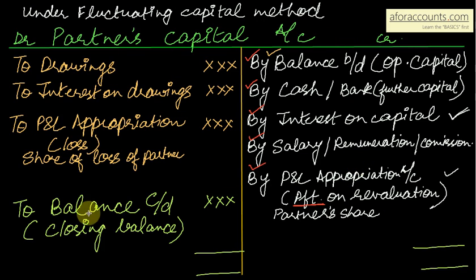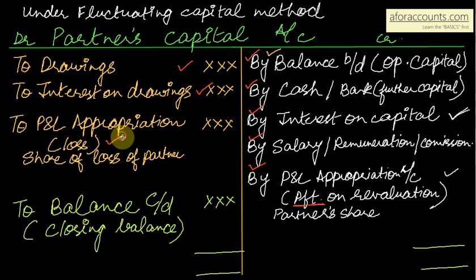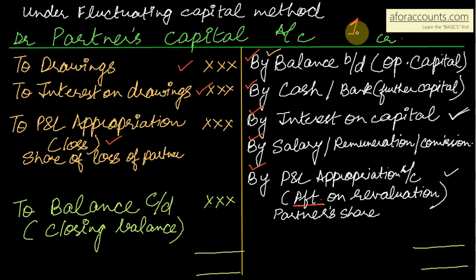To summarize: partner's capital account debit side has drawings, interest on drawings, and P&L appropriation account in case of loss. The closing balance is also on the debit side. Under the fluctuating capital method, a single account — partner's capital account — is maintained, and the balance keeps changing. Now let's move on to the fixed capital method.